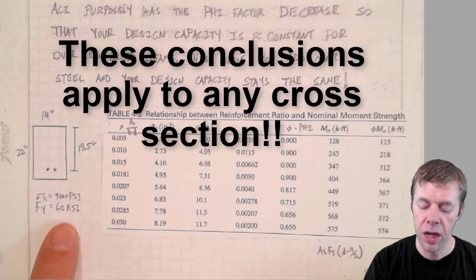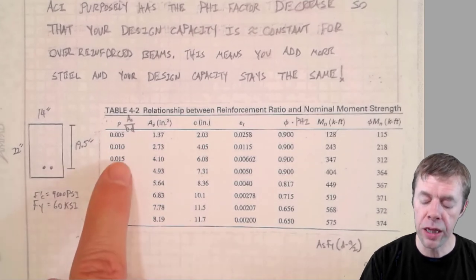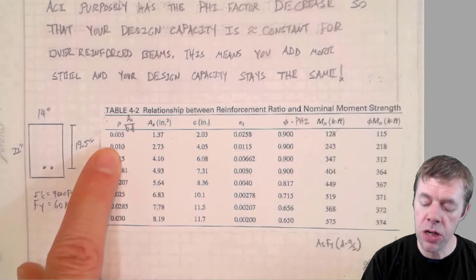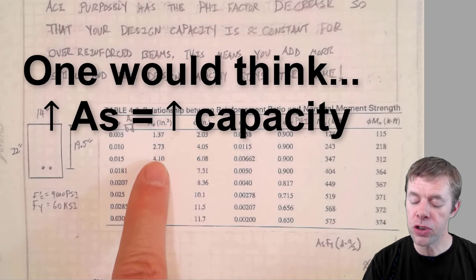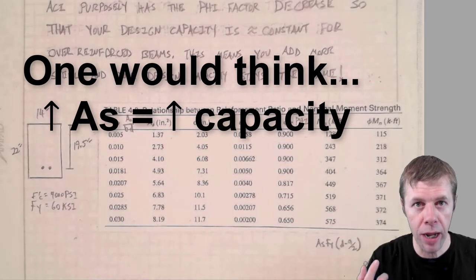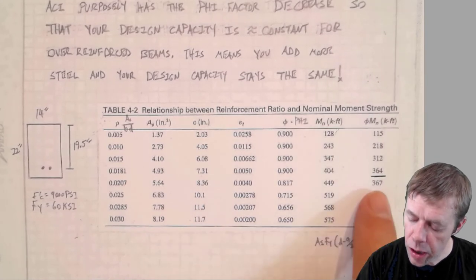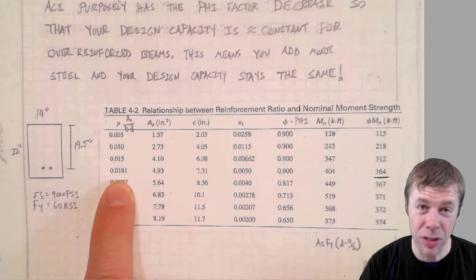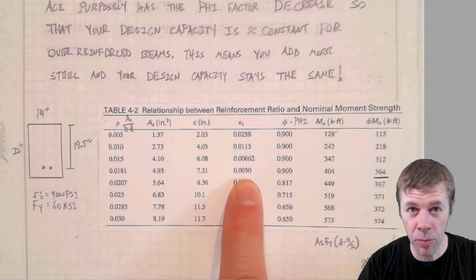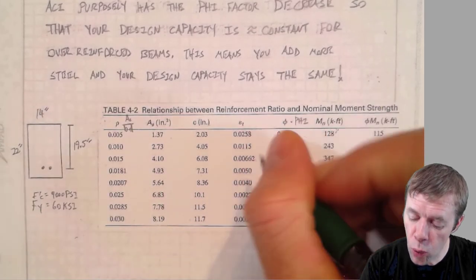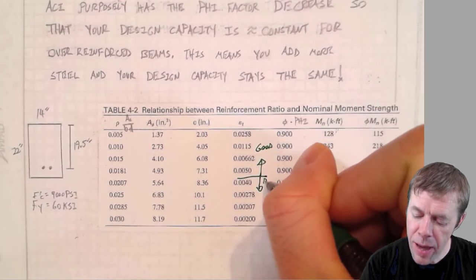If we take a typical beam that's 14 inches by 22 inches with a D of 19 and a half inches, F prime C is 4,000 PSI, F_Y is 60 KSI. This is the answer for the capacity versus the amount of steel for a number of different rows, which leads to a number of different area of steels. And you would think that as your steel was going up, you would think your capacity would go up, right? Look what they did, those sneaky people. After you hit a point about here, about a row of 0.0181. Remember, it's not about the row. It's about the strain in the steel. At 0.005, that's that magic number I was telling you about. ACI wants you to be here. They want this. This is good. This is bad.